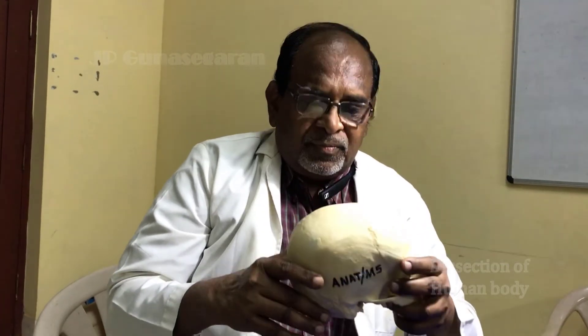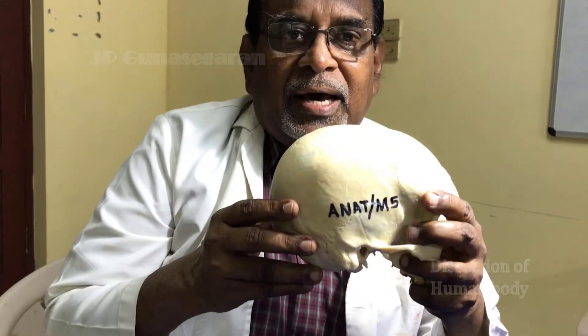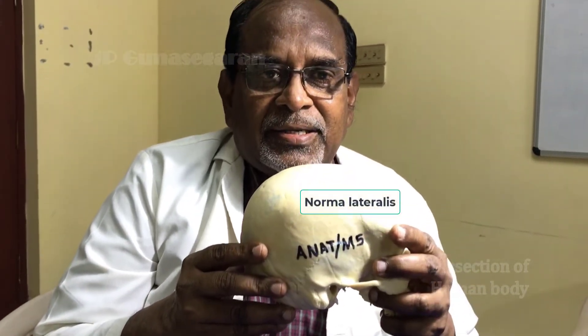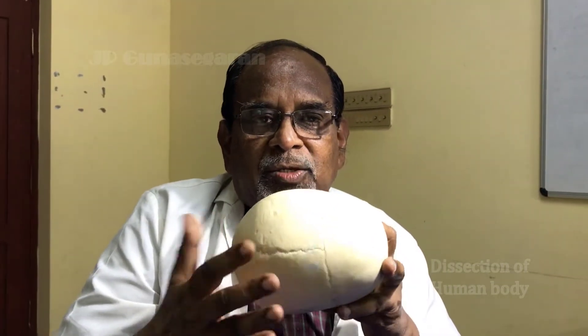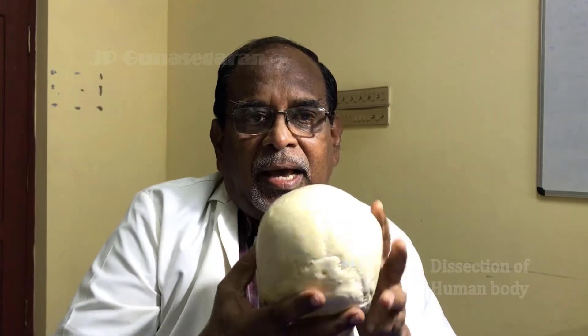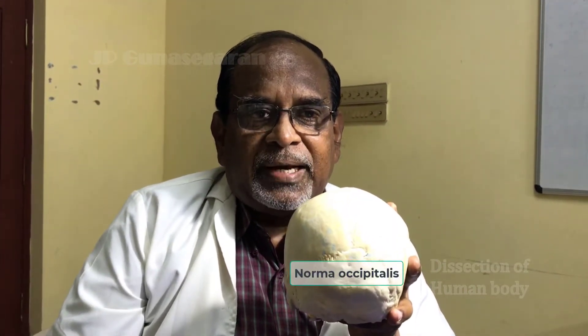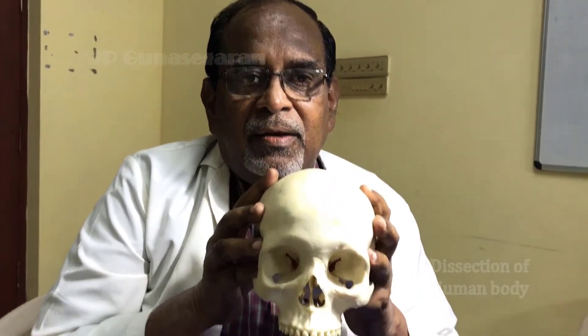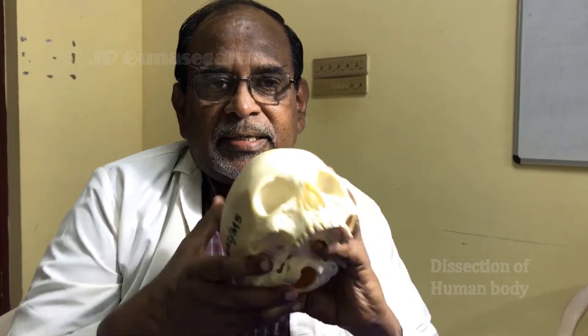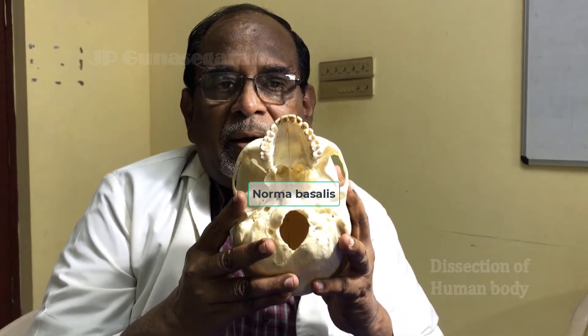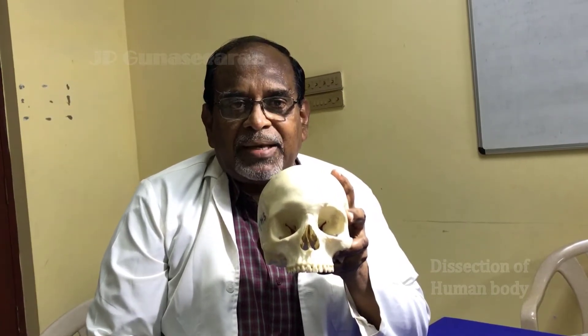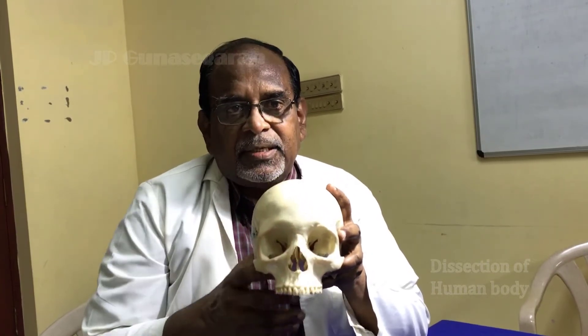The external features of the skull can be studied by looking at it from various angles. The lateral view is known as the norma lateralis, the view from above is called norma verticalis, the posterior view is norma occipitalis, the front view is called norma frontalis, and the basal view is norma basalis. In this video we are going to discuss about the norma frontalis.